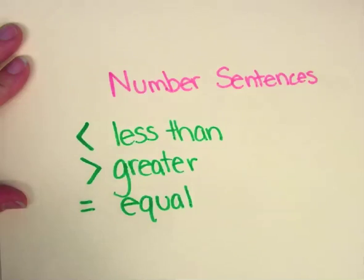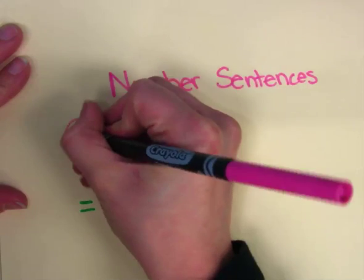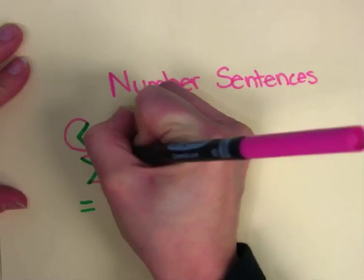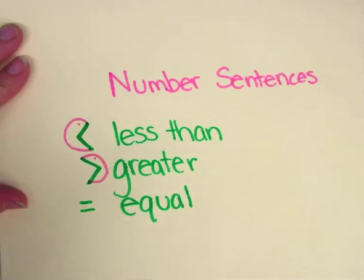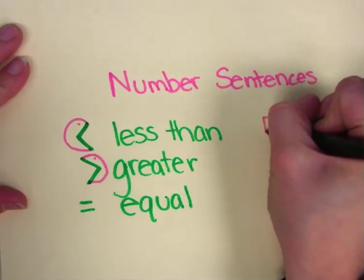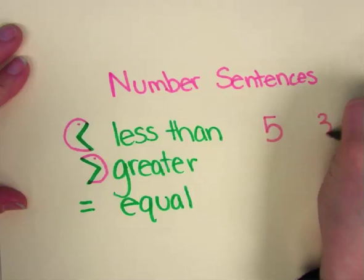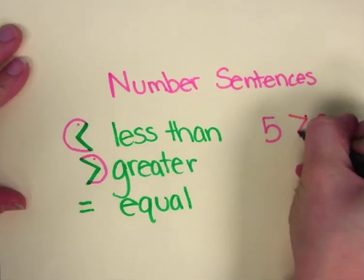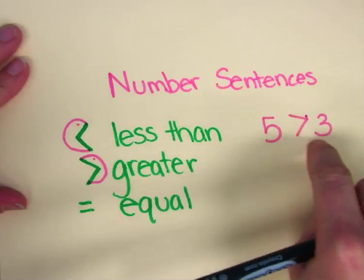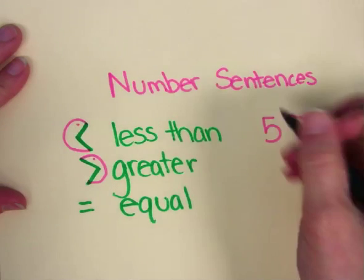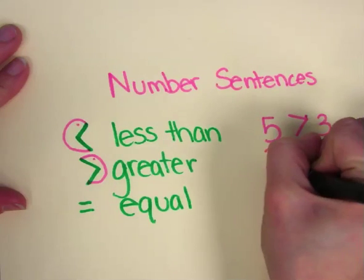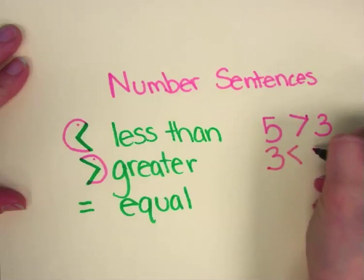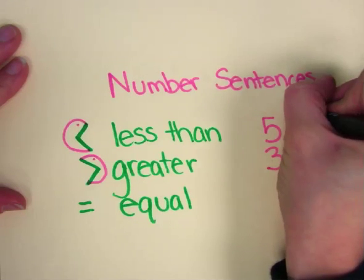Remember, with less than or greater than, you can think of it as a Pac-Man with a mouth that always wants the bigger number. So if I was to write five and three, my Pac-Man is going to want to eat the five. So five is greater than three. If I wrote it this way, I would have three is less than five.